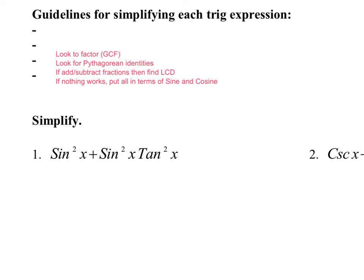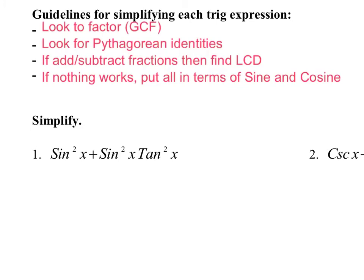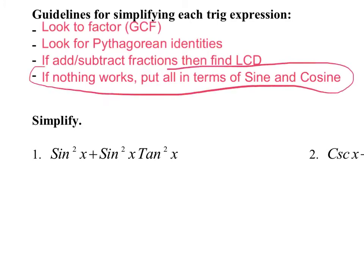On this video, we're still going to use the guidelines for simplifying trig expressions. We're going to go over three problems, and what we're really going to highlight and focus on is this last one. If nothing works, you can take any trig function and put it in terms of sine and cosine. A lot of times when you do that, you can get some trig expressions to cancel out, or you can get some Pythagorean identities.